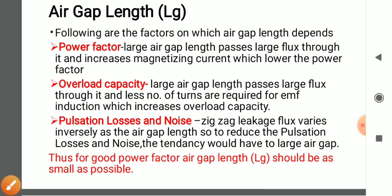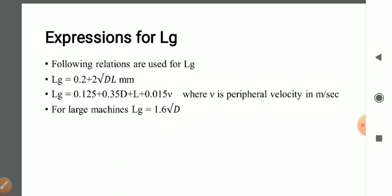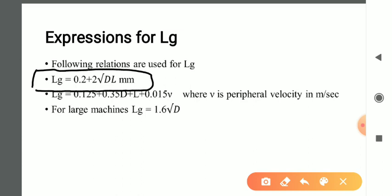Now, what are the different expressions normally used to calculate the air gap length? The air gap length can be calculated using various expressions. Usually, to calculate the air gap length we use the expression: lg = 0.2 + 2√(D × L), where D and L are the main dimensions. This expression is normally used to calculate the length of air gap.